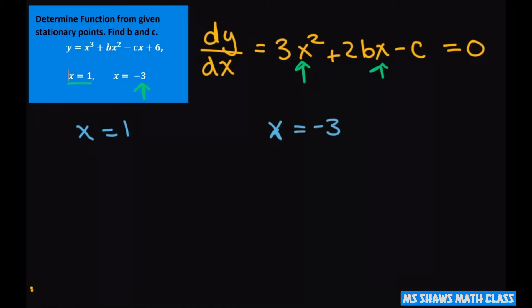And that's when our derivative with respect to x equals 0. So just plug that in and we're going to get 3 times 1 squared plus 2b minus c equals 0.